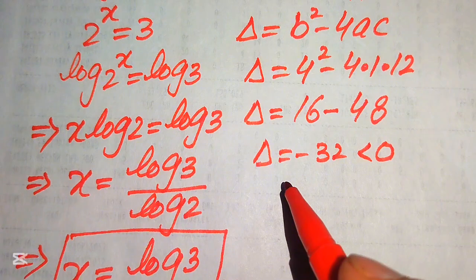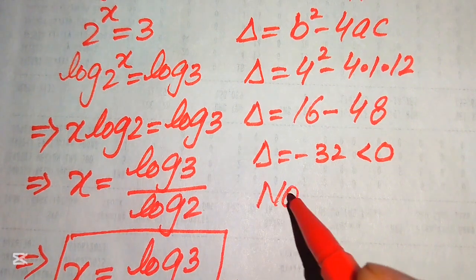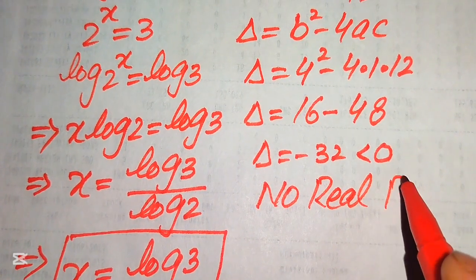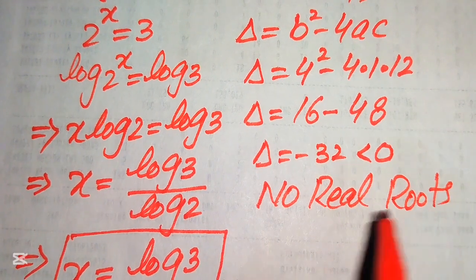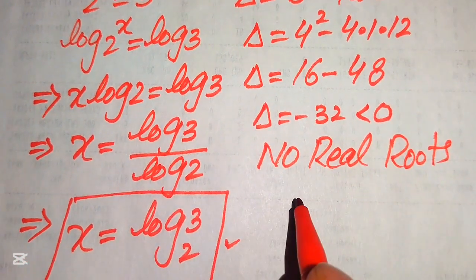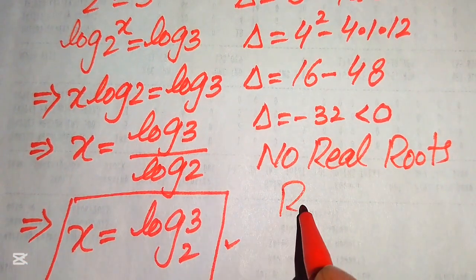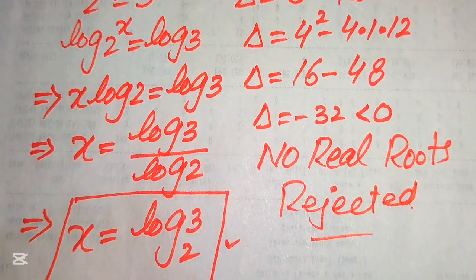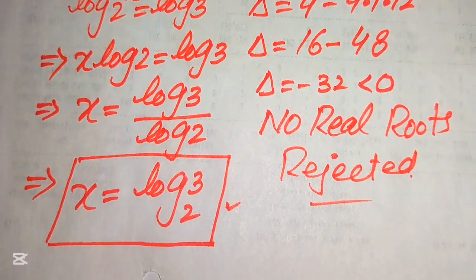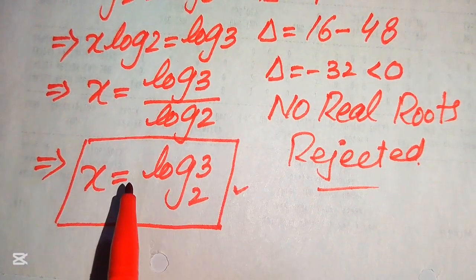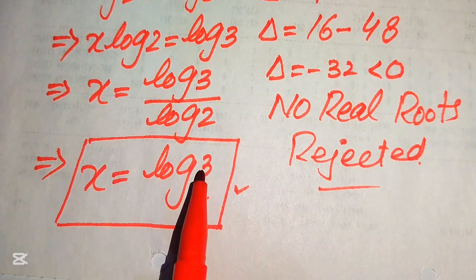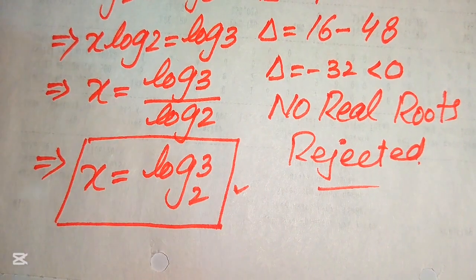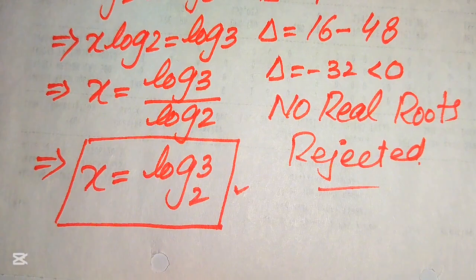Since the discriminant is less than zero, the quadratic equation has no real roots and is rejected. Therefore, there is only one real solution to the given problem: x equals log base 2 of 3. This is the final answer.